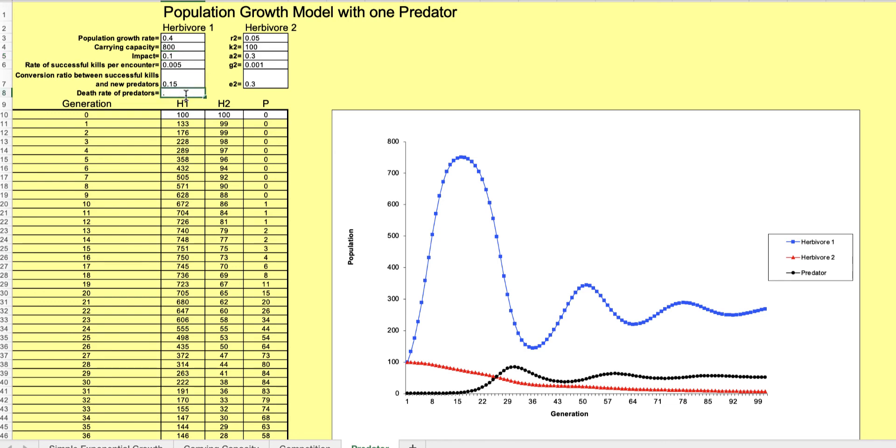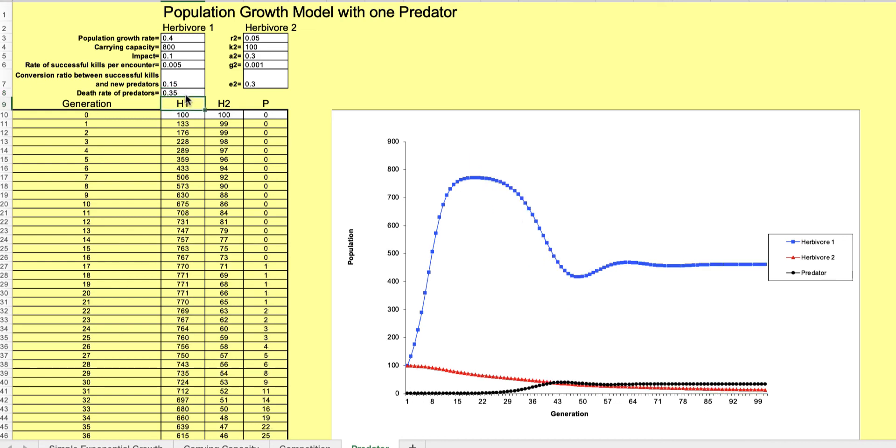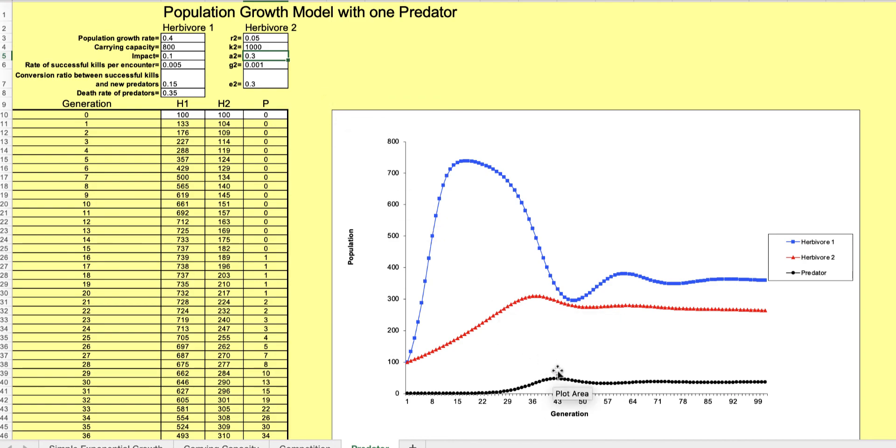So let's say the death rate of the predators, let's say they die off quicker and watch how much better the herbivores do. This one does great right, but herbivore two who doesn't have a very high carrying capacity, now he's better off. Now they're doing great, the predators are barely making it.